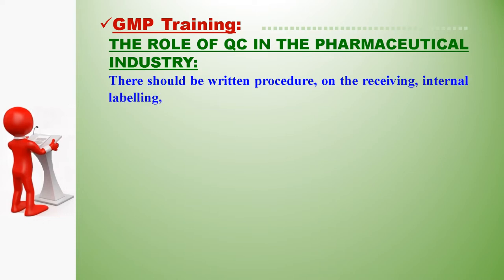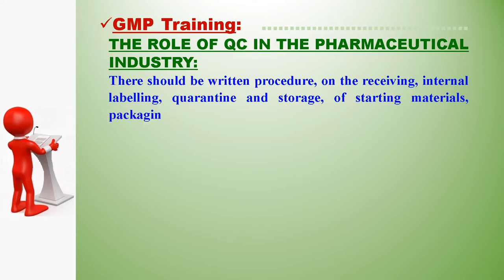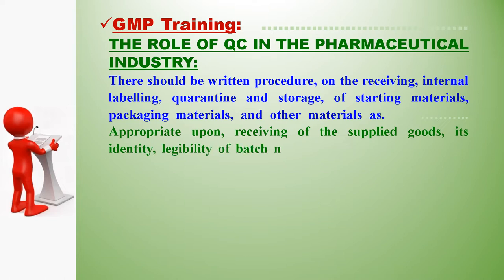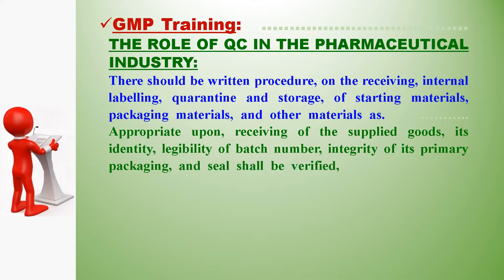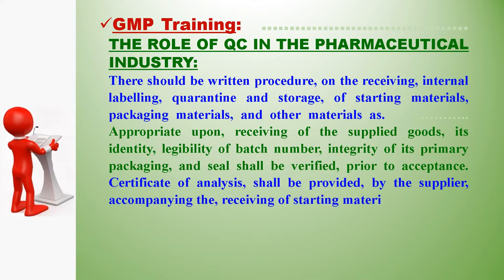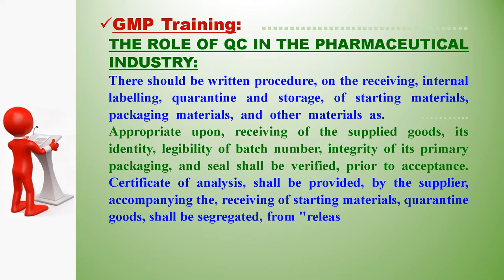There should be written procedures for receiving, internal labeling, quarantine, and storage of starting materials, packaging materials, and other materials. Upon receiving supplied goods, identity, legibility of batch number, integrity of primary packaging, and seal shall be verified prior to acceptance. A certificate of analysis shall be provided by the supplier. Quarantine goods shall be segregated from released goods, and rejected goods stored in a defined area with controlled access, such as a locked area.